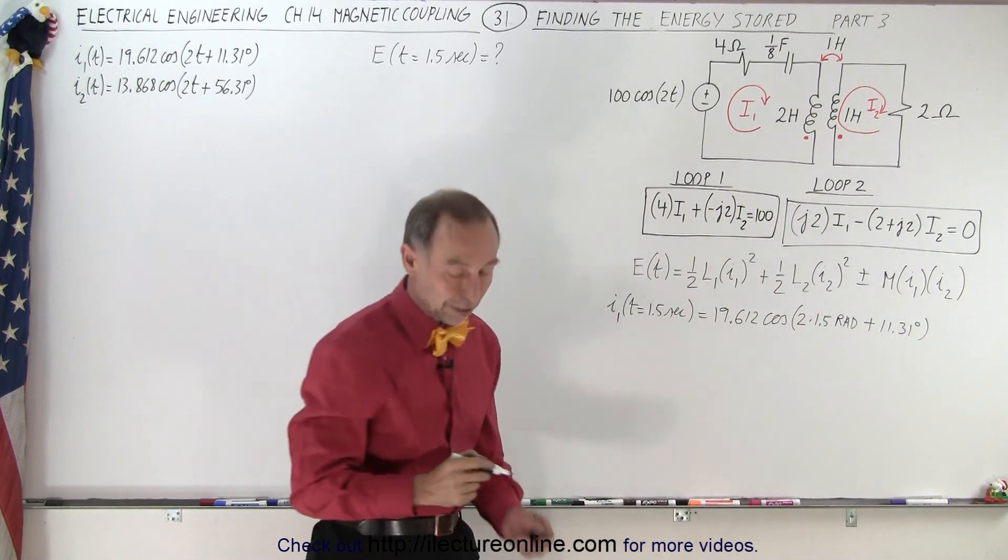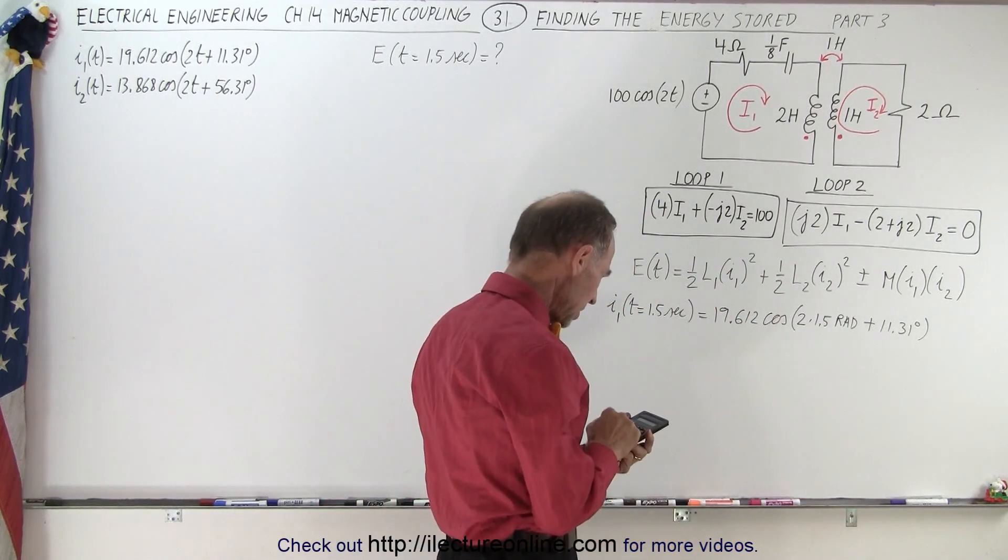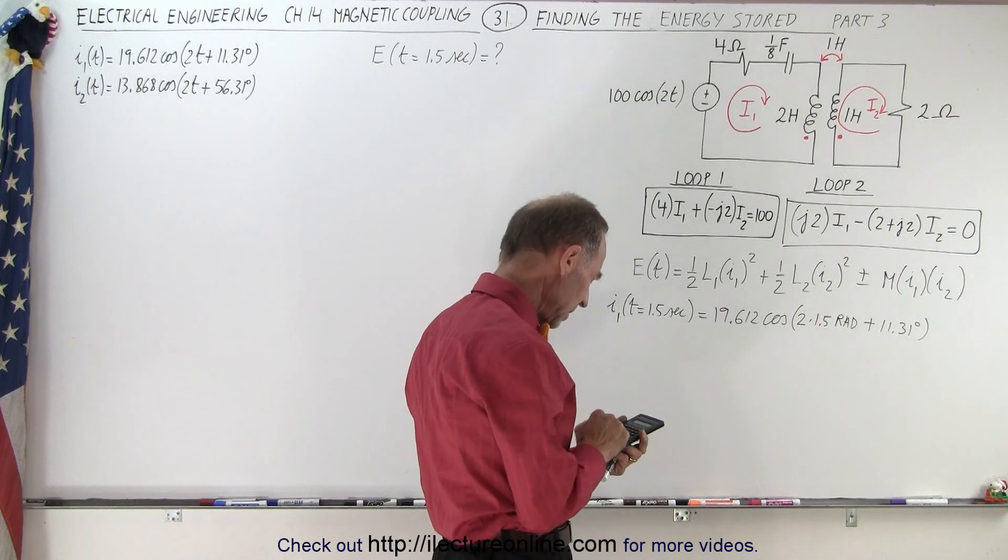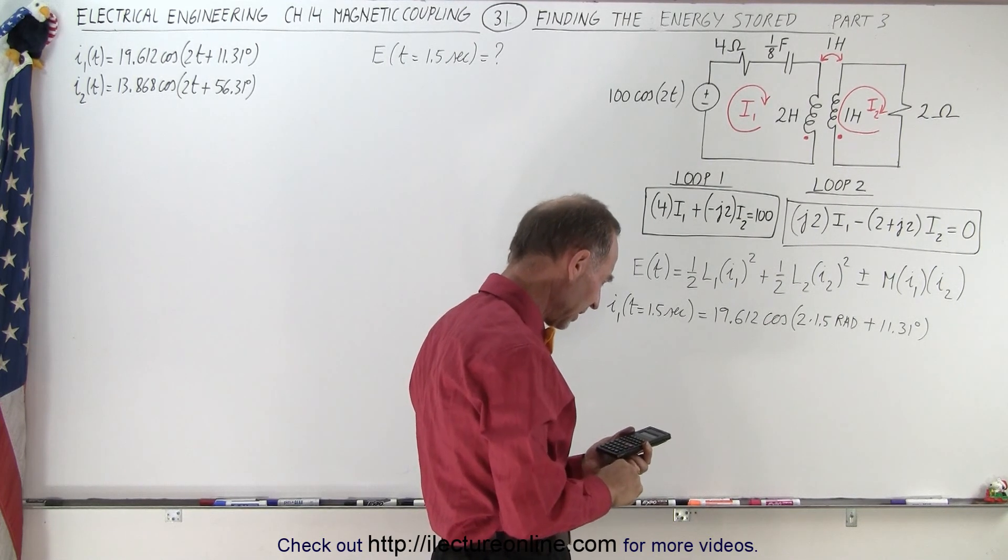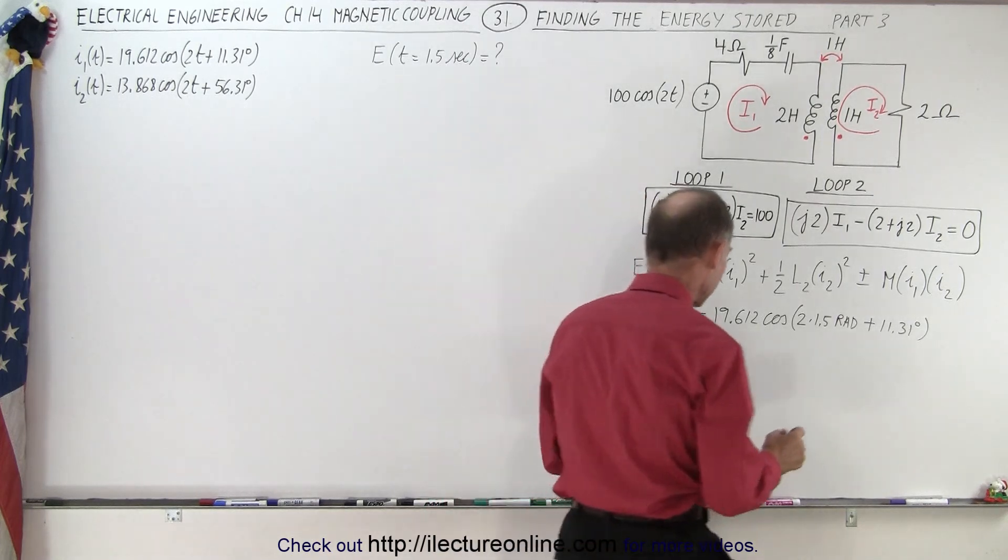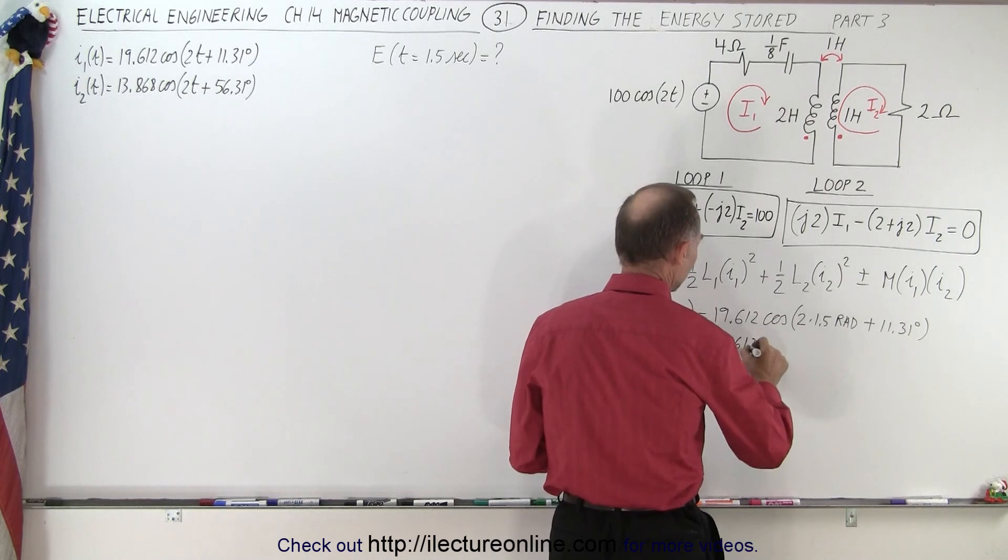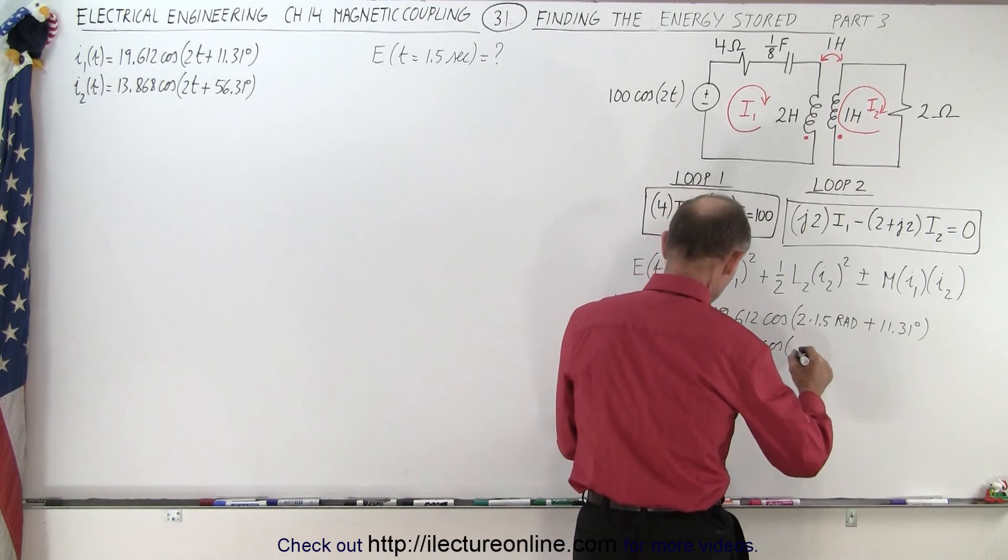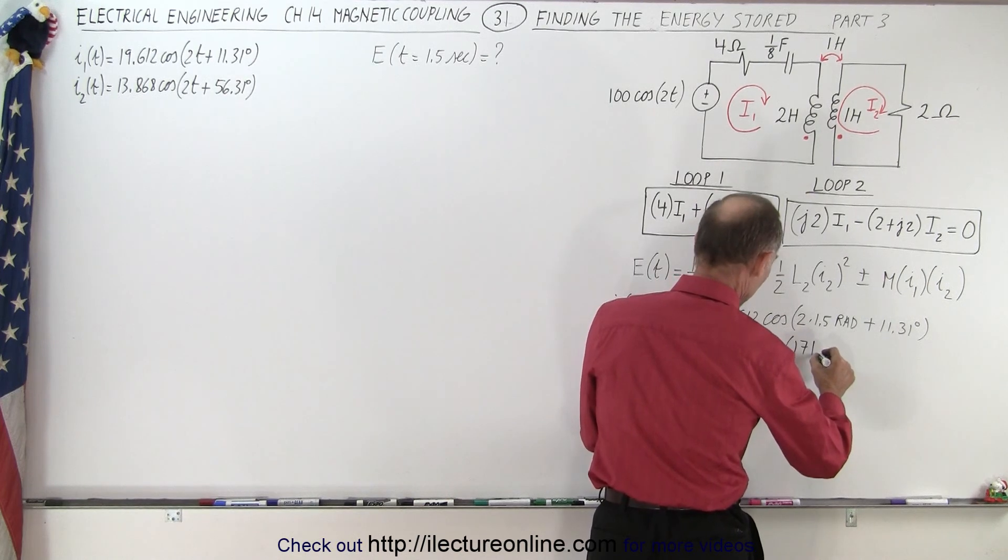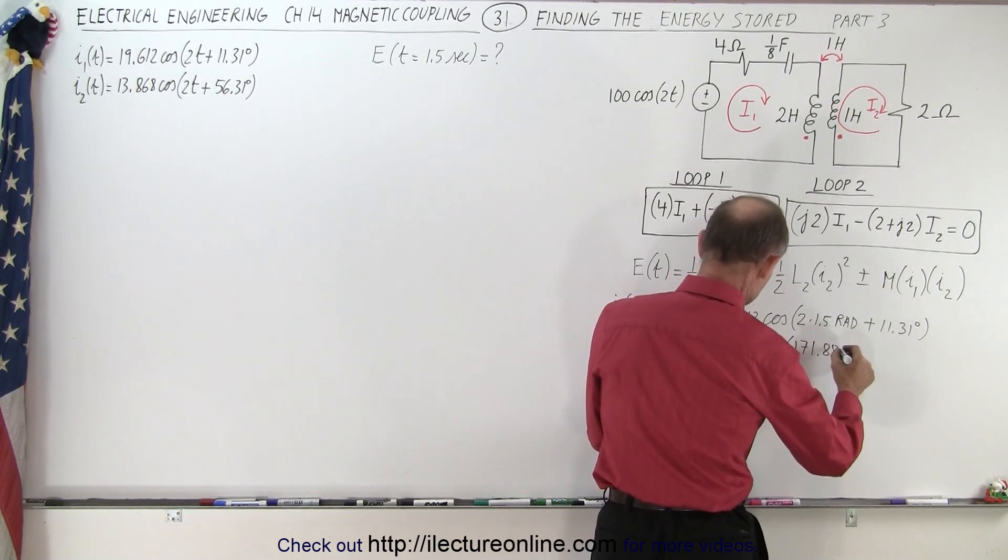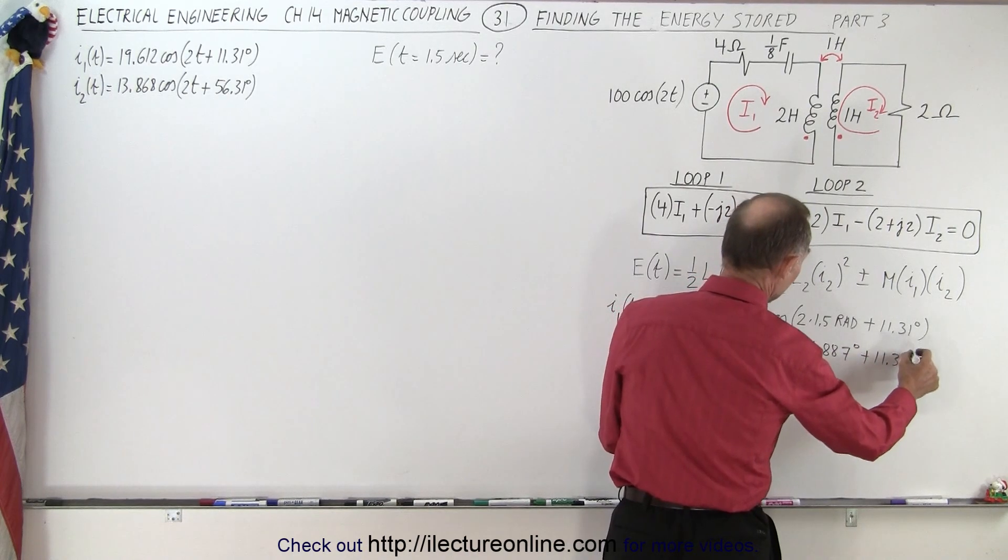So we have to convert that from radians to degrees. So we have 3 times 180 divided by pi equals 171.887.